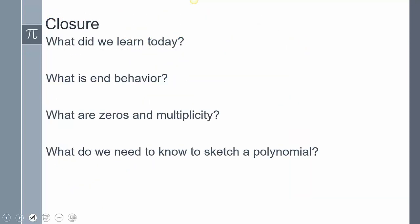So closing today's lesson, we talked about polynomials and introduced how to sketch them and all the different elements. End behavior is essentially what the graph does as x goes to negative infinity and as x goes to positive infinity — is my y going up or down? The zeros are where the graph crosses the x-axis, and the multiplicity is how many times each zero occurs. To sketch a polynomial you need three things: the end behavior, the zeros and their multiplicity, and the y-intercept.